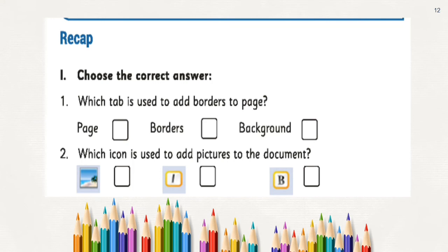Let's look at the recap. Which tab is used to add borders to page? The Borders tab. Which icon is used to add pictures to the document? Image icon. The Image icon is used to add pictures to the document.